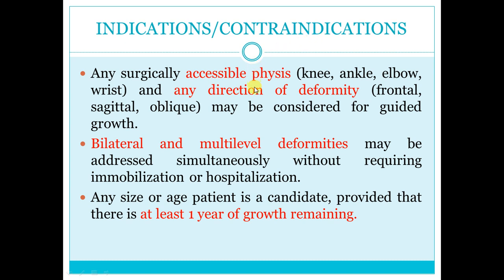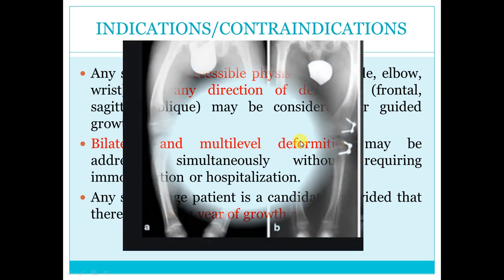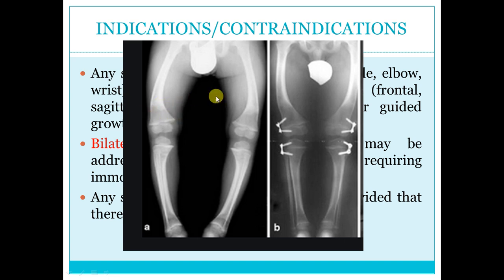Indications for the 8-plate: any accessible physis — knee, ankle, elbow, wrist, and so on — any direction of deformity (frontal and sagittal), bilateral, and multiple deformities. For example, if you imagine doing osteotomy for a genu varum with both femoral and tibial components, that would require six osteotomies — three on each side. With guided growth using four plates, the same correction takes about one hour versus two and a half hours for osteotomy.